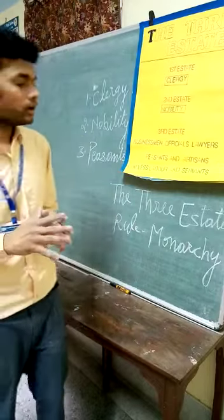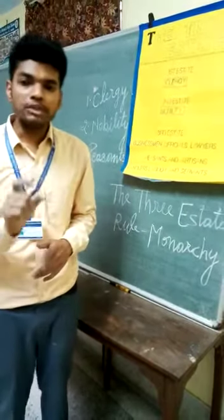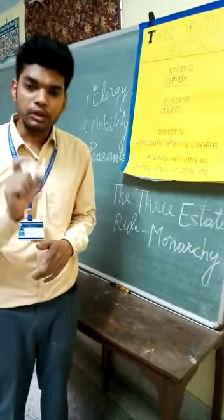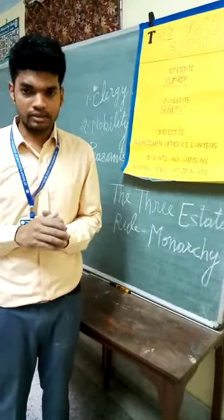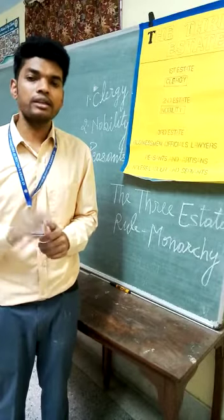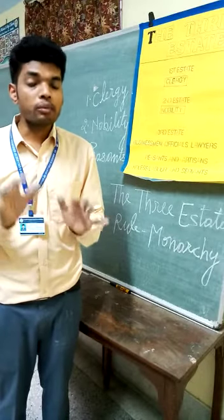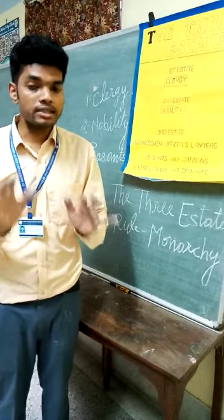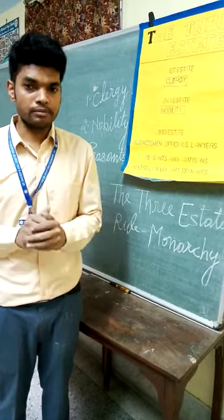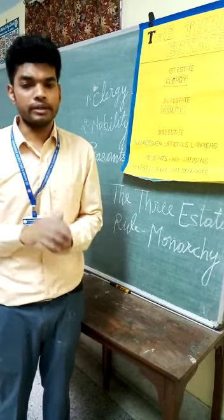Now tell me, which groups were dominating? Clergy and nobility. What was the ruling system? Monarchy.